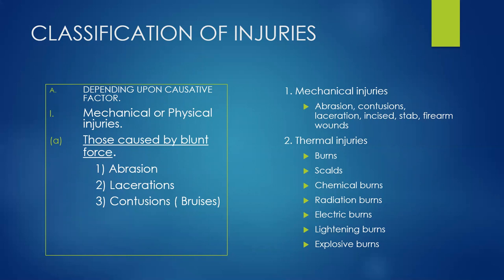Thermal injuries can be due to burn, scars, chemical burns, radiation burns, electric burns, lightning burns, and explosive burns. Mechanical or physical injuries can be caused by blunt force — examples include abrasions, lacerations, and contusions, otherwise called bruises.